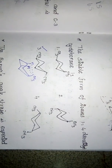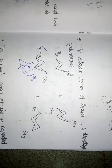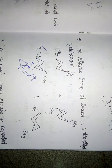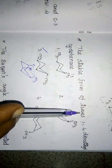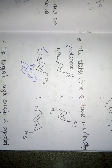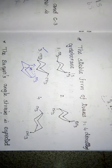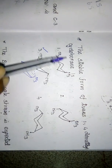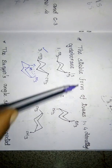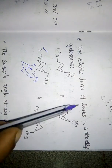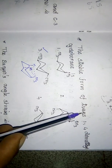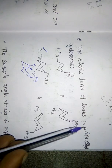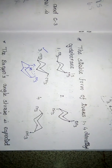Welcome back to this class. In this class we will see some questions from Unit 1. The first question asks for the stable form of trans-1,4-dimethylcyclohexane. We need to find the stable form of the trans isomer with methyl groups at the 1 and 4 positions.